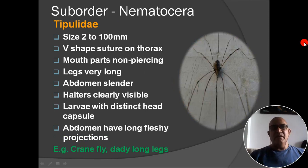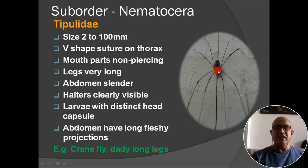Next family: Tipulidae. Size 2–100 mm; V-shaped suture on thorax; mouthparts non-piercing type; legs very long; abdomen slender; halteres clearly visible; larvae with distinct head capsule; abdomen has long fleshy projections. Example: crane fly, daddy longlegs. In this figure you can see how very long the legs are.